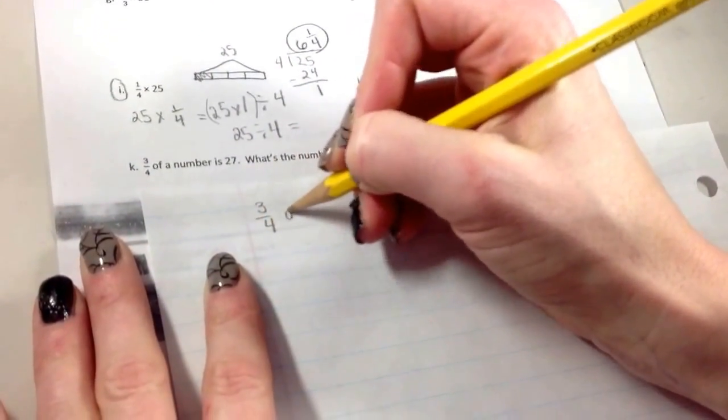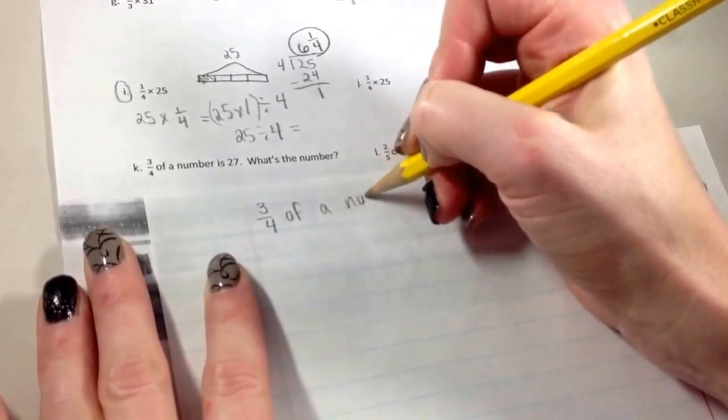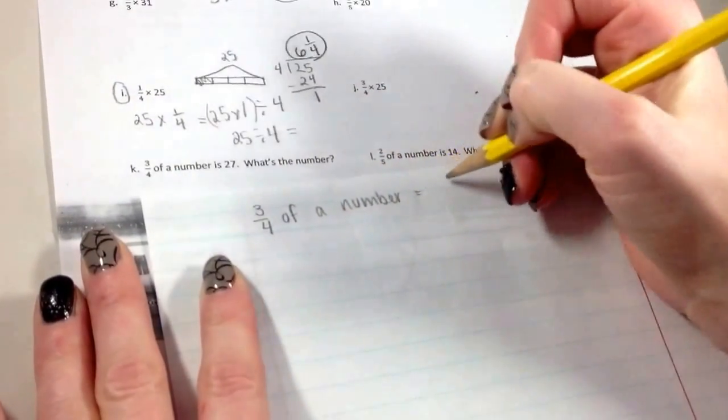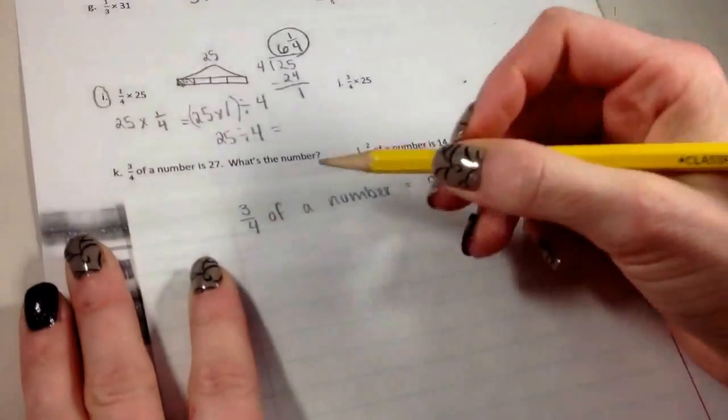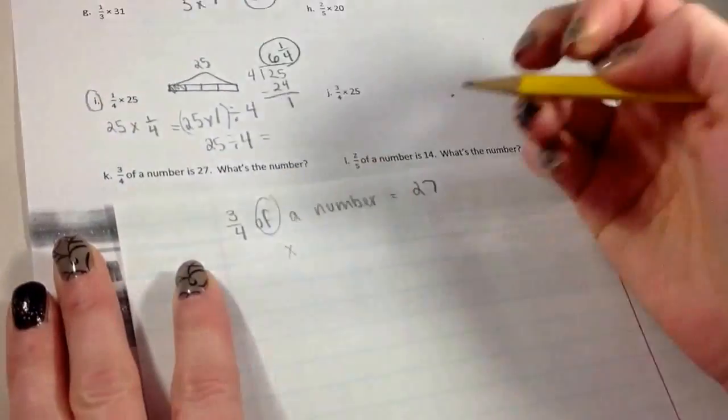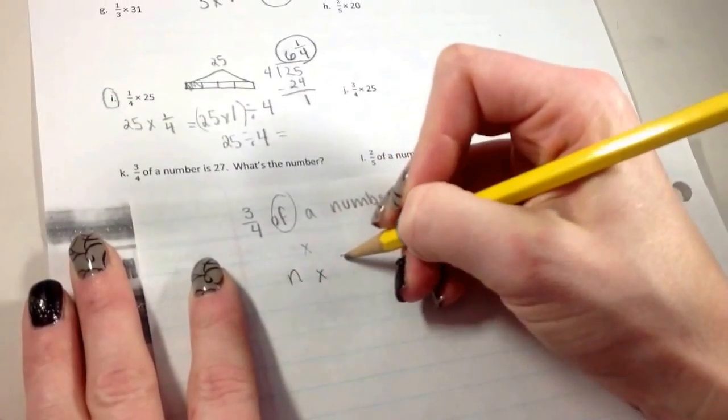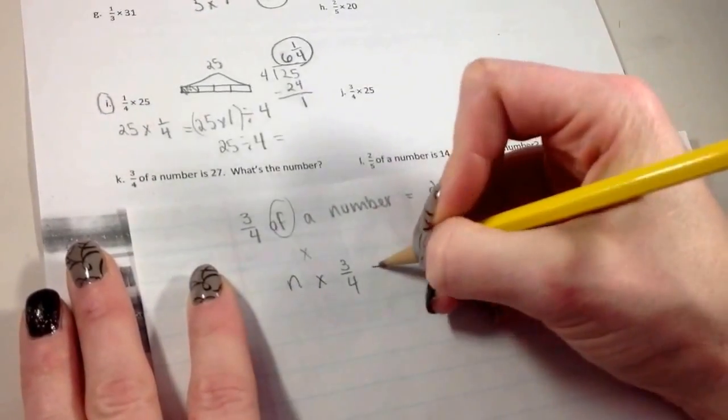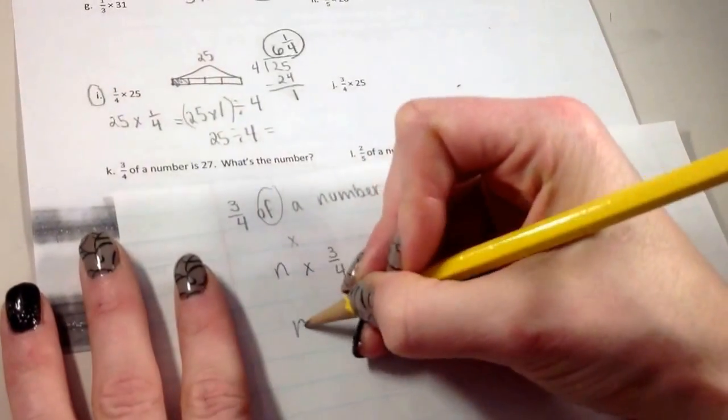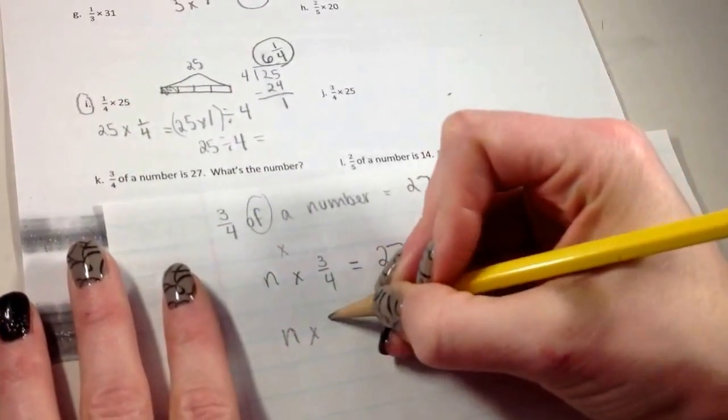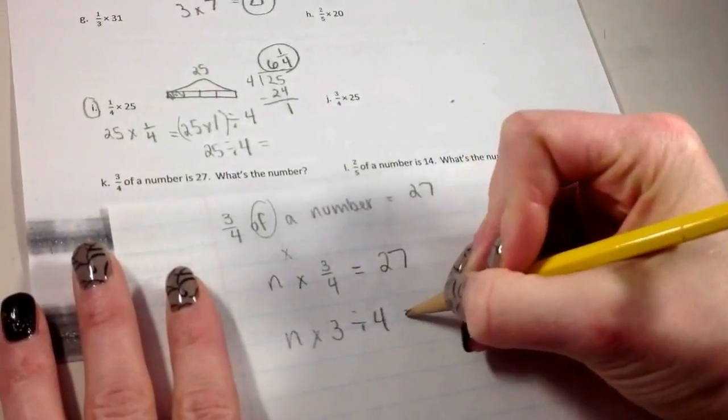So we said three-fourths of a number is 27. And they want to know what the number is. So of is multiply. So I have a number that I'm multiplying by three-fourths. And it's going to equal 27. So I'm going to just rewrite it as an equation. n times 3 divided by 4 equals 27.